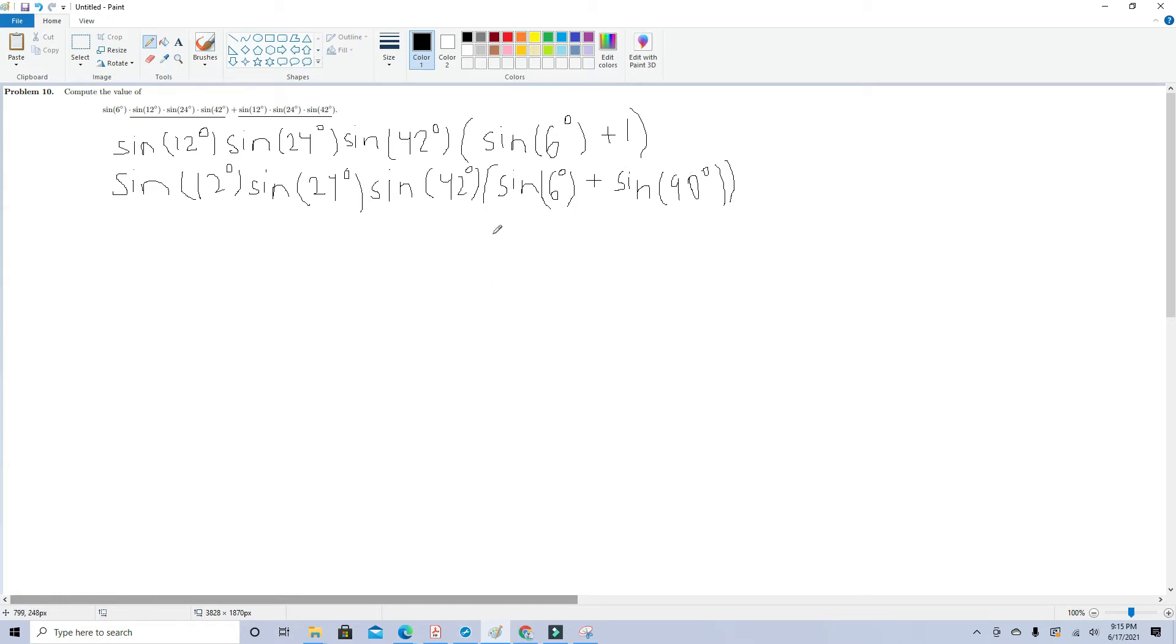This is beneficial because this allows us to use sum to product on sin(6°) and sin(90°). This allows us to convert the sum of these two trigonometric functions into a product of two trigonometric functions, which we can connect with the rest of the expression. If we use sum to product on these two terms, we get 2sin(48°)sin(42°). And of course, we also have the previous constant before that, sin(12°)sin(24°)sin(42°).